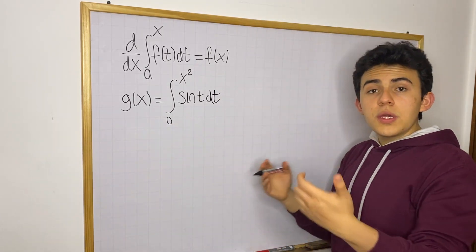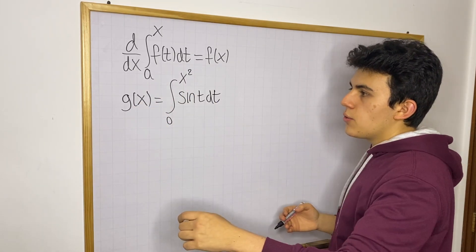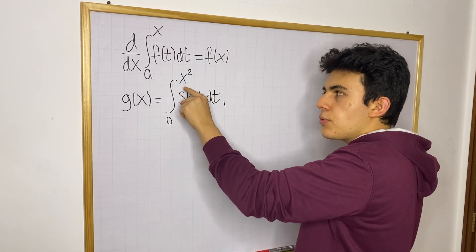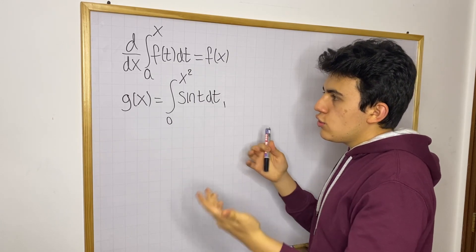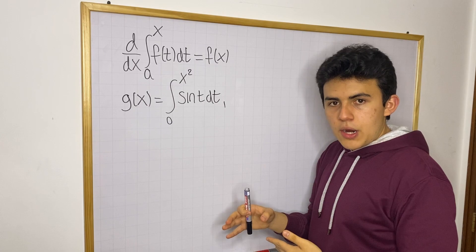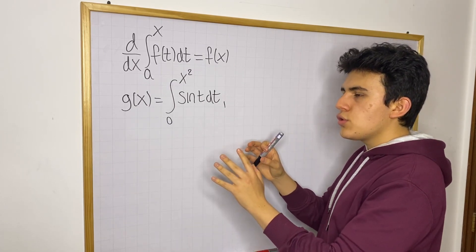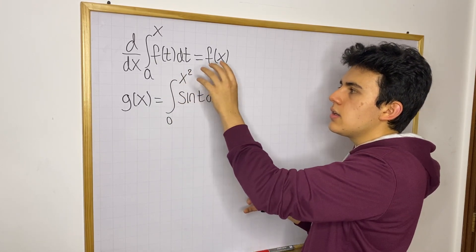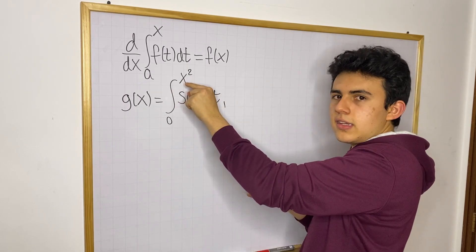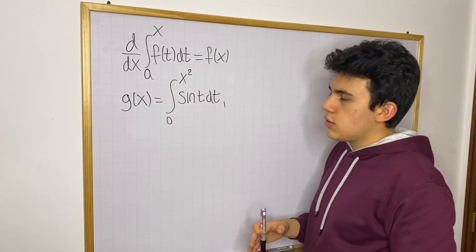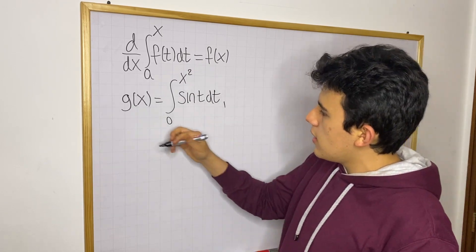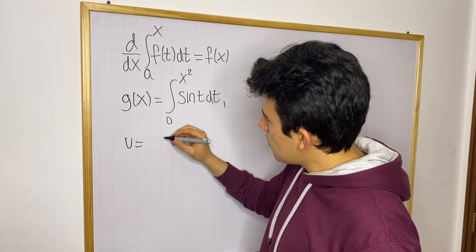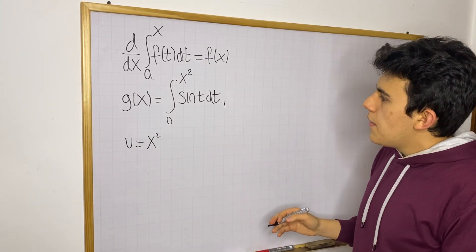Now if we want to find the derivative of g, we know we can use FTC2, but there's going to be something interesting here. Since x² is a function, we can do what we used to do with the chain rule: introduce a new variable equal to the expression giving us trouble, which in this case is x². We want a single simplified input at the upper bound.